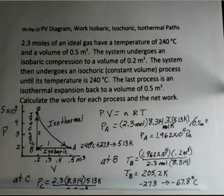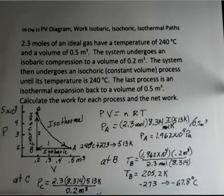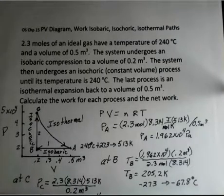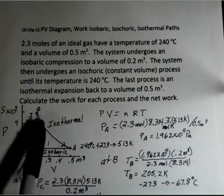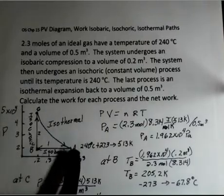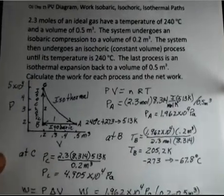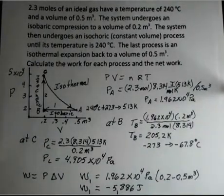So at point C, we could calculate the pressure. Again, using the ideal gas law. So the pressure is number of moles times the gas constant, R, 8.314, times the temperature. Where is this temperature? It's the temperature at point C. So back to the 513 Kelvin. All along this isotherm, we're at 513 Kelvin. So point A has that temperature. Point C has that temperature. And then we divide by the volume at point C. I came up with 4.905 times 10 to the 4th Pascals.